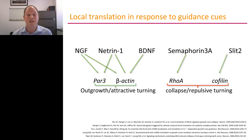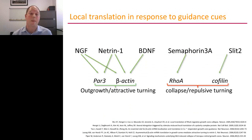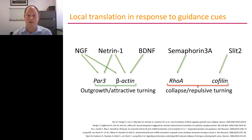This led to the model for local translation and attractive growth: NGF binding to its receptor leads to local translation of Par3, which then leads to nucleation of the Par complex, resulting in axon outgrowth and cytoskeleton dynamics. These examples together all follow essentially the same system: axon guidance cues lead to local translation of specific mRNAs that then have effects that are either attractive or repulsive.